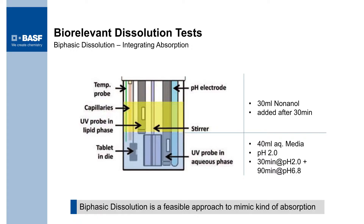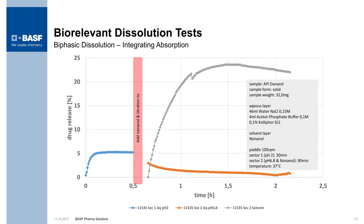Looking at bio-relevant dissolution testing, we add a second layer: an oil phase. You can use octanol, and in many cases we're using nonanol. This is added after about 30 minutes. You can measure through two different UV probes the concentration of drug in the oil phase and in the water phase under stirred conditions. Here's a quick example using a similar drug: the aqueous phase is measured up until about half an hour. At that point, the machine adds the nonanol phase and titrates it, and you can very quickly see the drug jumping into the oil phase while the aqueous phase comes back down.